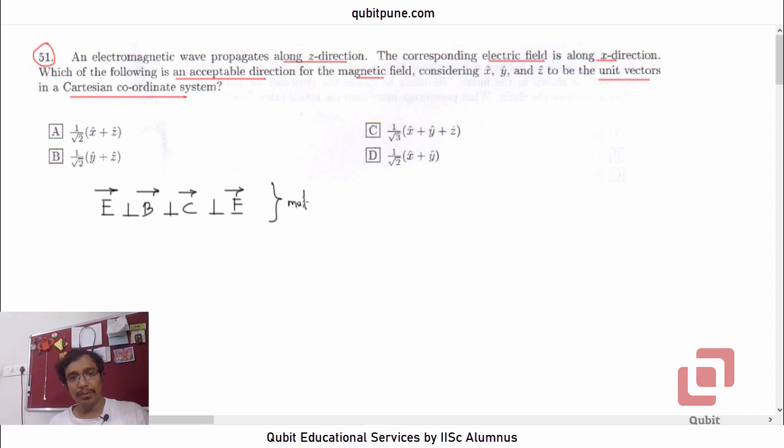These are mutually perpendicular vectors. They are saying that the wave is propagating along Z direction.